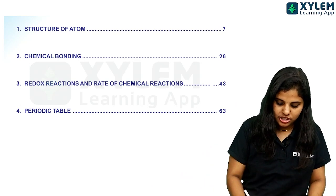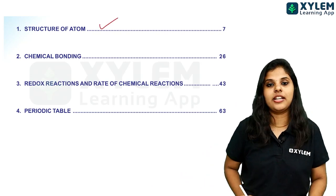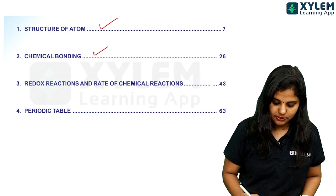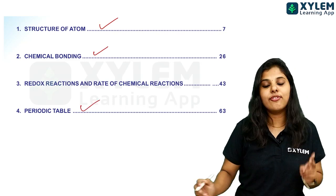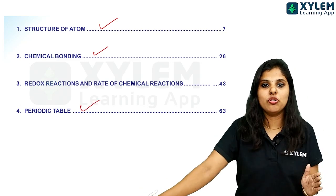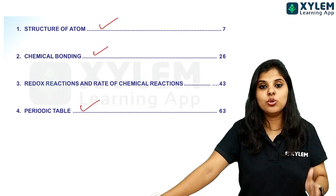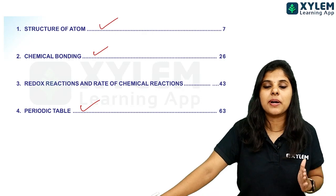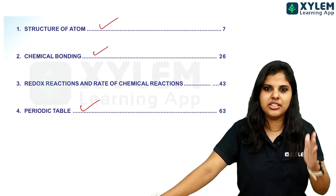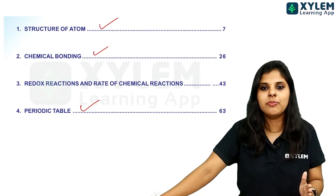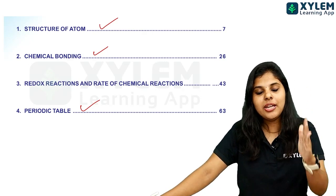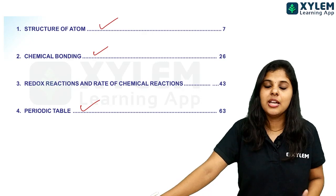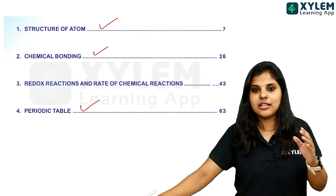The first chapter is the structure of the atom. The second chapter is chemical bonding and the fourth chapter is the periodic table. These three chapters are made of pradhanim. The third chapter is the main thing. The rest of the chapters are also important.